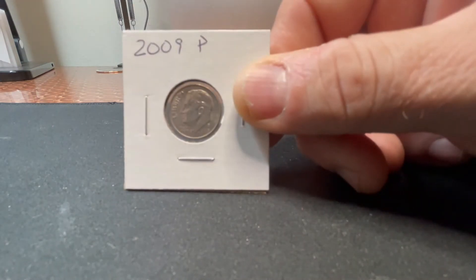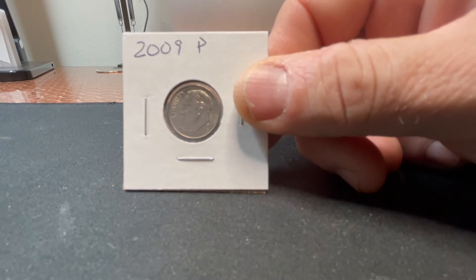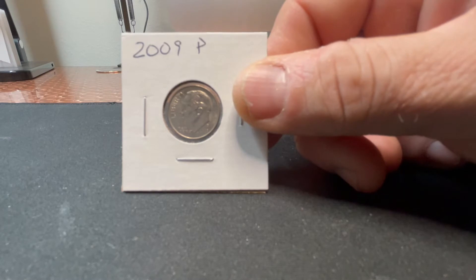We're going to start off with our friend the Dime. I'm going to give away a 2009 Philly. I really wish I could give away a silver but I've only found one and there's no way I'm giving away my first silver Dime. So you guys are stuck with the next best, 2009 Philly.